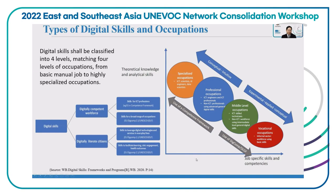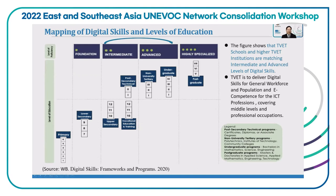Based on the World Bank, there are four types of digital skills: foundation level, intermediate level, advanced level, and specialized level — four levels. They match four levels of occupation, from vocational occupation to middle-level occupation, professional occupation, and specialized occupation. From this mapping of digital skills and the levels of education, we can find that our secondary-level TVET schools and higher-level TVET institutions match the intermediate and advanced levels of digital skills. So we are supposed to produce and offer intermediate and advanced digital skills.